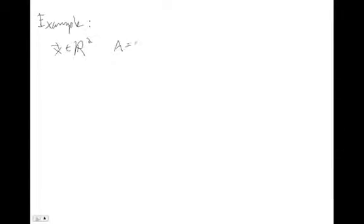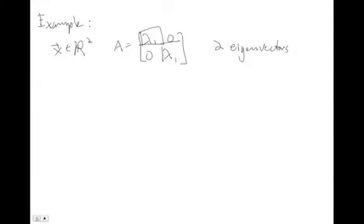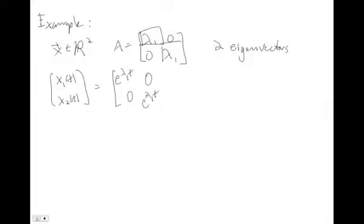Now consider x in R2 where A is still diagonal but with a repeated eigenvalue — one eigenvalue λ₁ with multiplicity two, but two Jordan blocks (each 1×1), meaning two eigenvectors. The solution looks exactly the same: x₁(t) = e^(λ₁t)·x₁₀ and x₂(t) = e^(λ₁t)·x₂₀ — still completely decoupled. The only difference is they have the same eigenvalue so they evolve at the same rate, but they remain independent of each other.